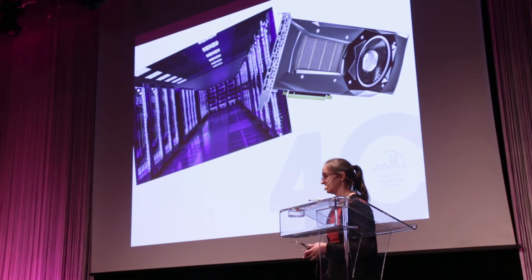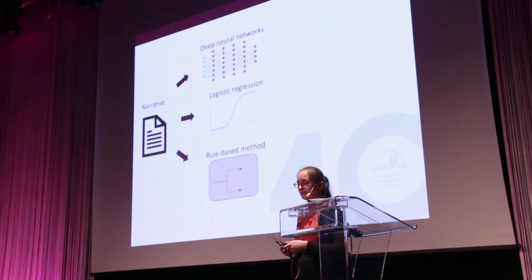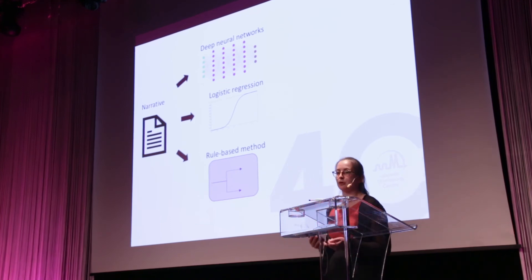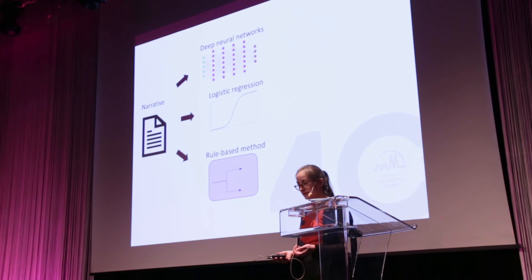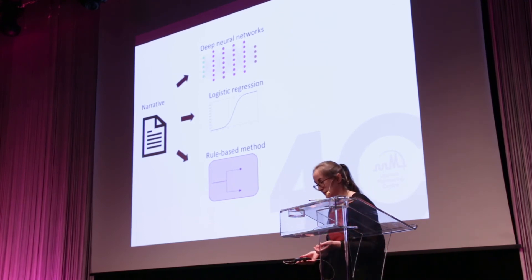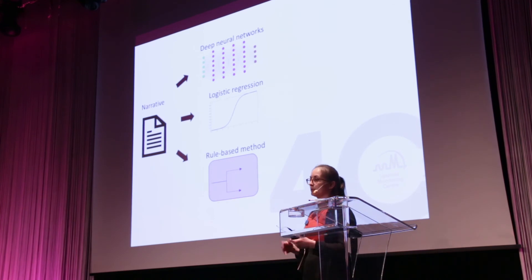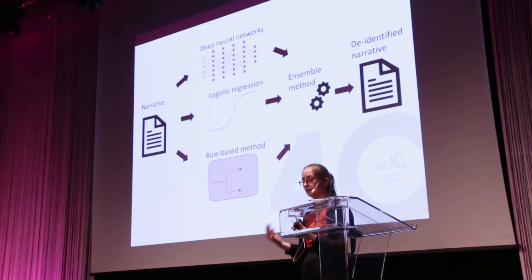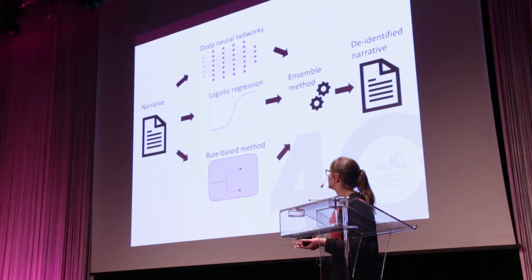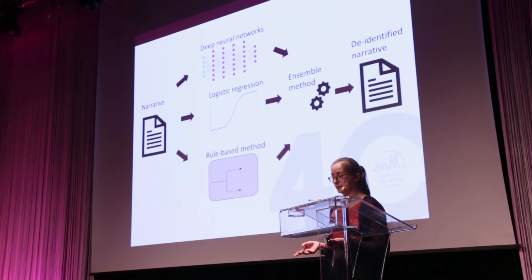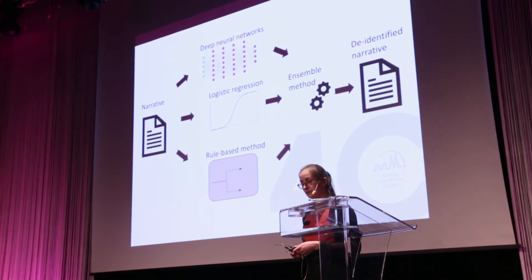During our de-identification project at the UMC, we are using deep neural networks but in combination with more traditional methods such as logistic regression and rule-based methods. Each of these methods produces its own prediction of which part of the narrative includes personal information, and we then use a so-called ensemble method that combines these outputs by voting to create a de-identified version of the narrative.